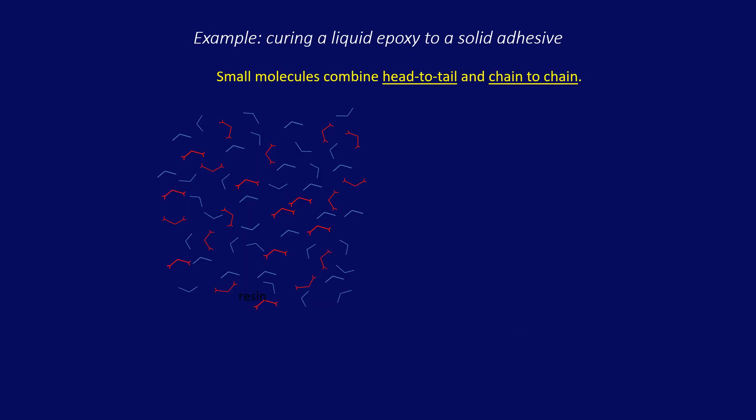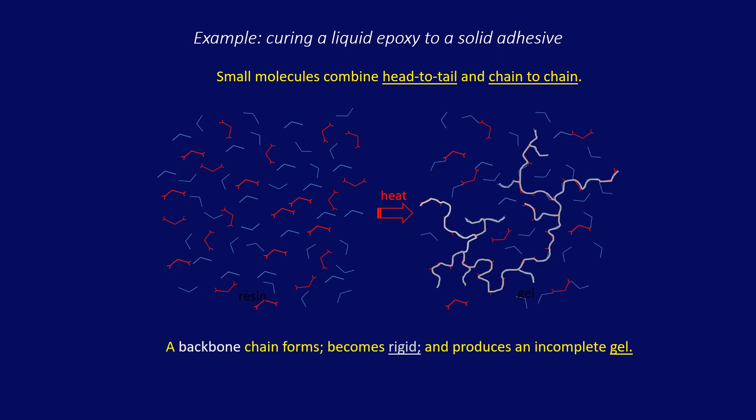Much of the practical chemistry around us is actually polymer chemistry. Let's look at the chemistry of adhesives and coatings for an example of the unique properties of microwaves. Here's how a liquid epoxy resin made up of small molecules that can be heated or cured to form a three-dimensional mesh of chains that is a strong, solid polymer adhesive.